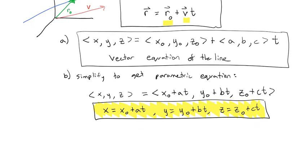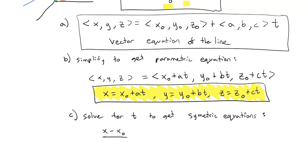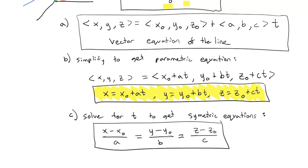In fact, we can go one step further and solve each of these equations for t to get what we call the symmetric equation for a line. Solving the first equation, we subtract x-naught and divide by a — that equals t. The second equation gives y minus y-naught over b equals t, and z minus z-naught over c equals t. These become the symmetric equations for the line.